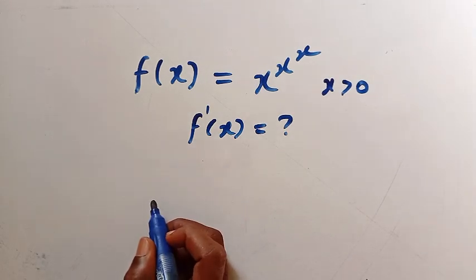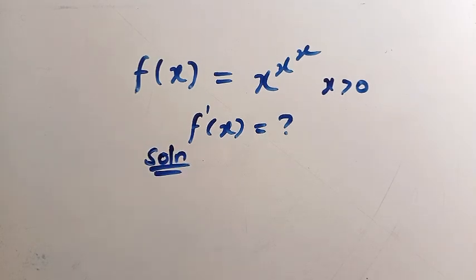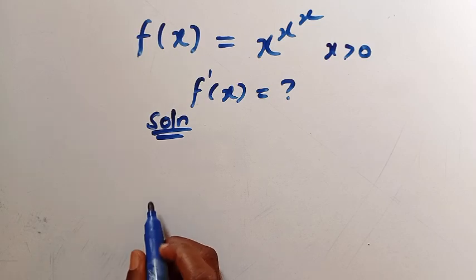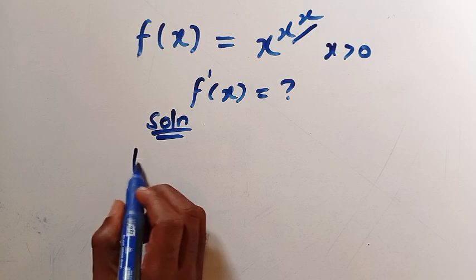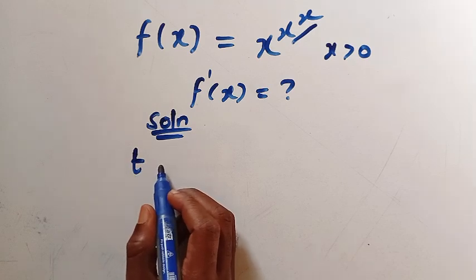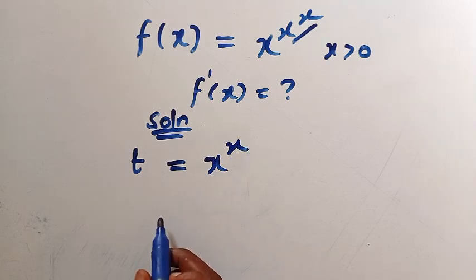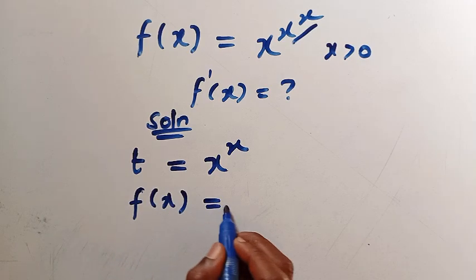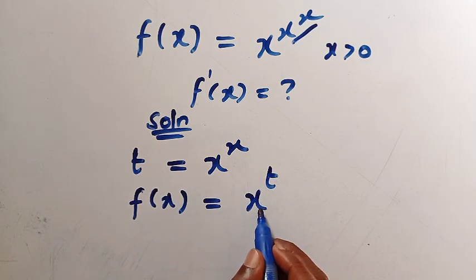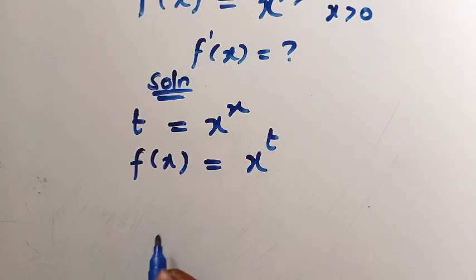Let's consider the solution. The first thing we are going to do is suppose we replace the two powers x^x with t, where t is a function of x. So if t equals x to the power of x, therefore we are going to have f of x equals x to the power of t, where t depends on x.